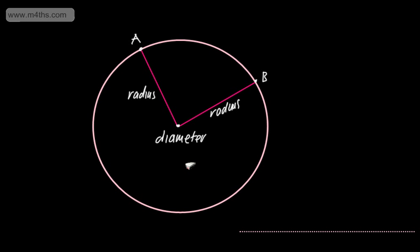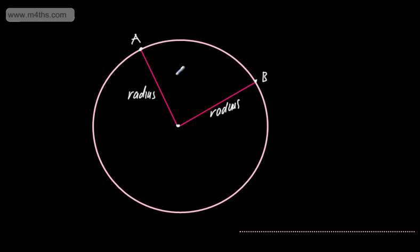We can see that we've got two different sectors. I've got what we call the minor sector, which is the smaller one, and the major sector. So this one is going to be a minor sector — it's simply the area trapped between this radius and this radius. The larger of the two is going to be the major sector.